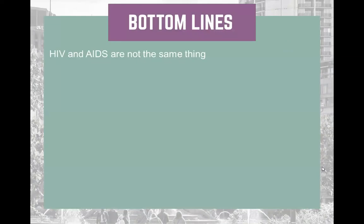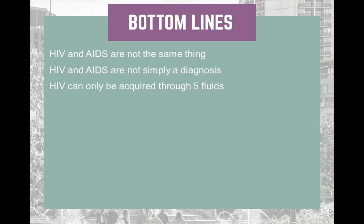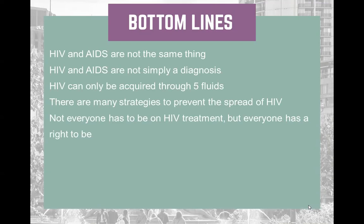The bottom lines are: HIV and AIDS are not the same thing; HIV and AIDS are not just a diagnosis — they have a social, political, and economic impact on folks and the world. HIV can only be acquired through five fluids: breast milk, blood, vaginal fluid, rectal fluid, and semen including pre-cum. There are many strategies to prevent the spread of HIV: barriers, PrEP, and treatment for folks living with HIV. However, not everyone has to be on HIV treatment — everyone has the right to be, but someone may not be if their immune system isn't being devastated by HIV at the moment, or if they can't consistently take medication, which is very important for becoming undetectable. Ultimately, it is up to the individual and their medical provider.